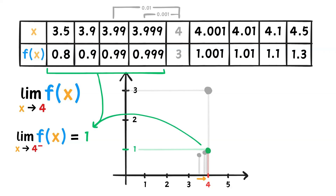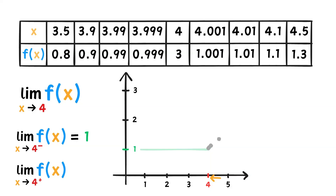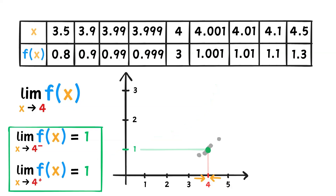So we found that the limit of f of x as x approaches 4 from the left is 1. What about from the right? Well, plotting the points given on the right, or the numbers greater than 4, we see that as the distance between 4 and the x value gets smaller and smaller, f of x is getting closer and closer to 1. So we can conclude that the limit from the right is 1 as well. The two one-sided limits exist and are equal, so the limit of f of x as x approaches 4 is 1.